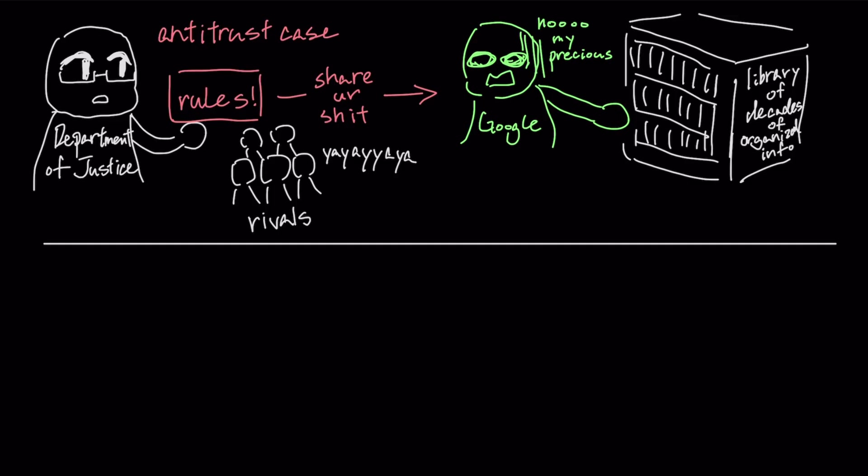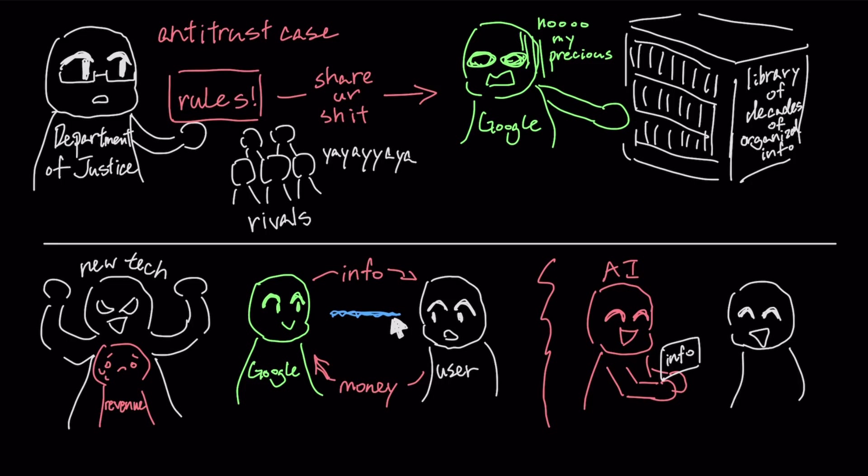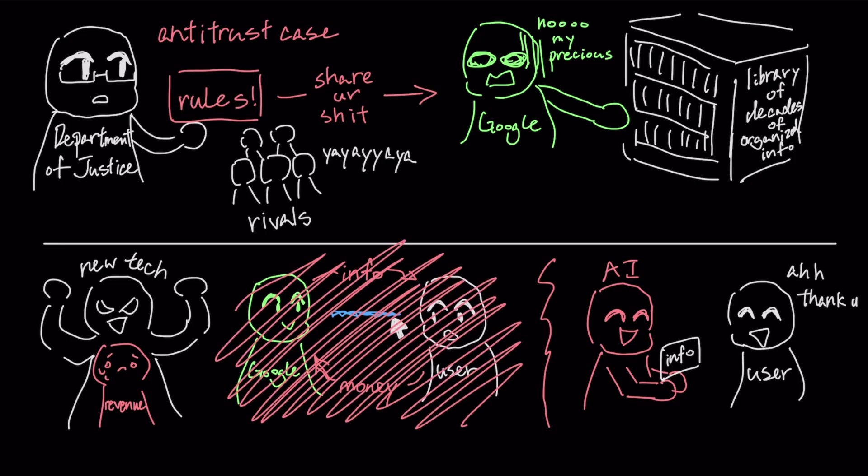There is also a big internal problem because the new technology they are building threatens to eat into the main way they make money. Google generates almost all of its profits when users search for something and click on a link. But if an artificial intelligence just gives you the answer directly, there is no reason for you to click on an advertisement and the company loses that revenue.